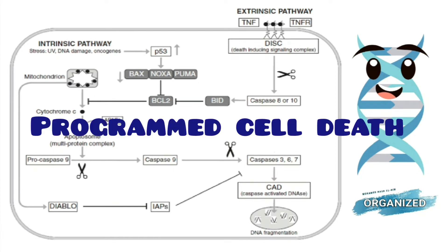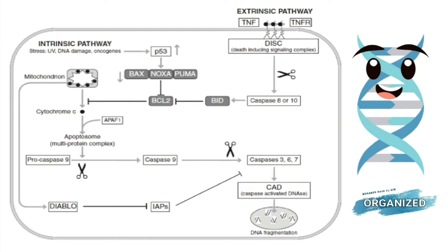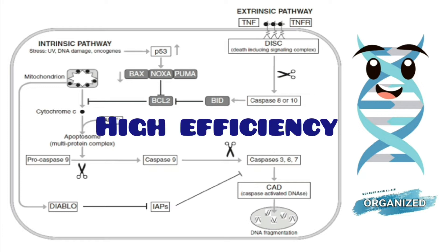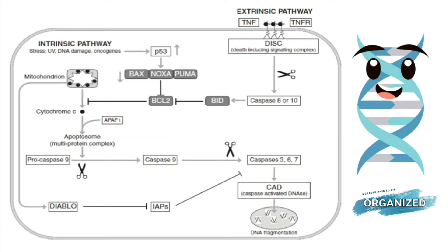Apoptosis is a programmed cell death. Simply, it's a death of a normal cell by a specific and defined way. The apoptosis process occurs with high efficiency in a normal person who doesn't have cancer disease. Compared to a cancer patient, apoptosis has a great defect and doesn't occur in a normal way.